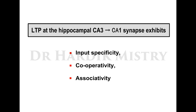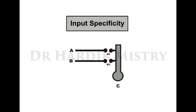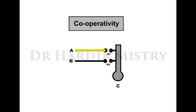LTP at the hippocampal CA3-CA1 synapse exhibits input specificity, cooperativity, and associativity. When AC synapse receives high-frequency stimuli, only the AC synapse becomes potentiated and LTP develops at AC but not BC synapse — this is input specificity. When AC synapse receives low-frequency stimuli paired with stimuli from the C cell, the AC synapse becomes potentiated — this is cooperativity.